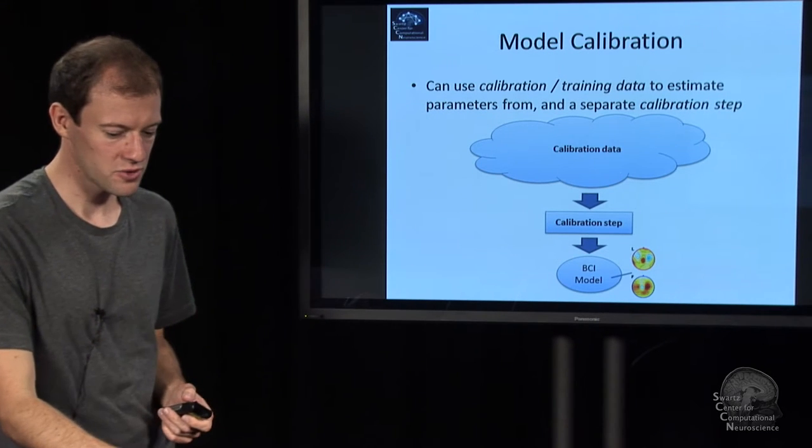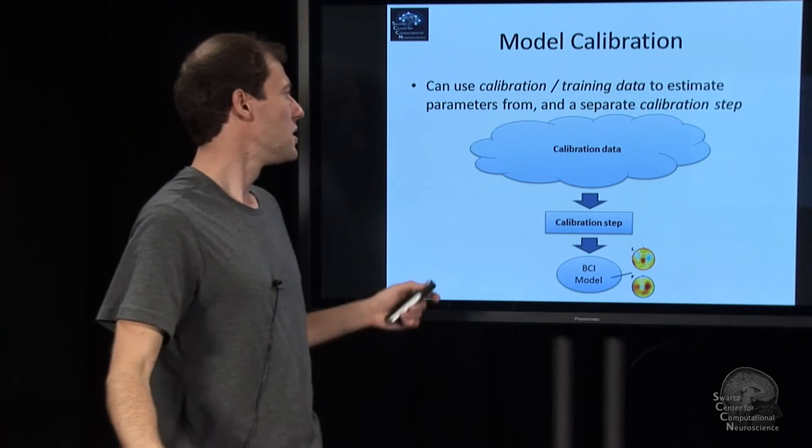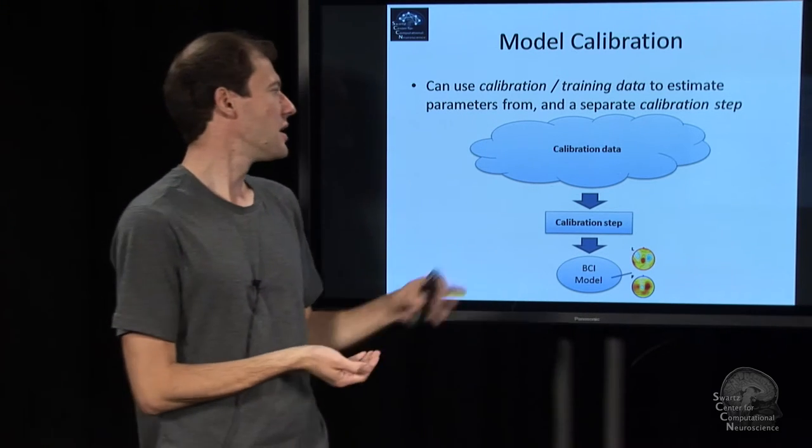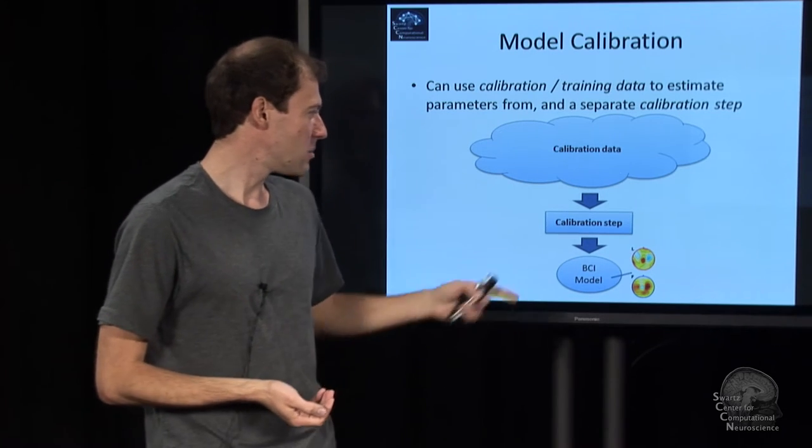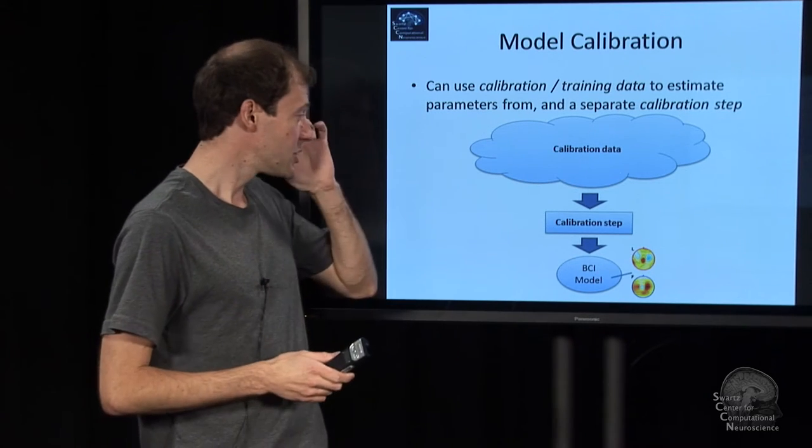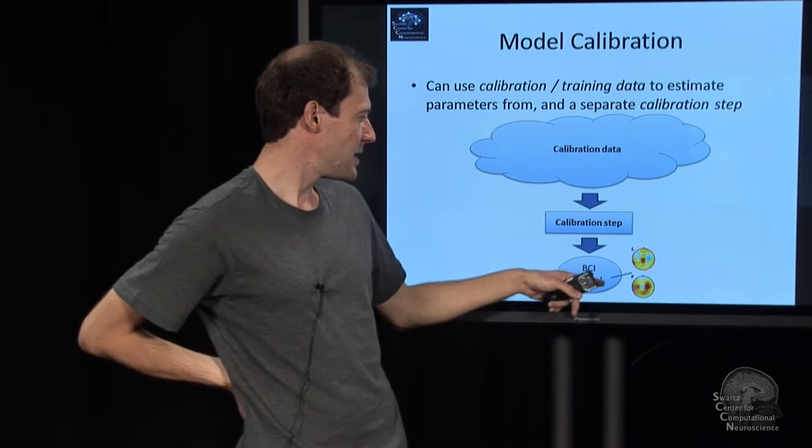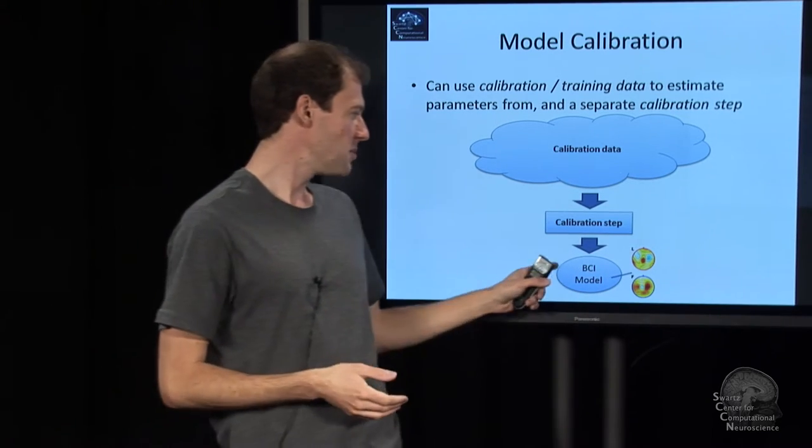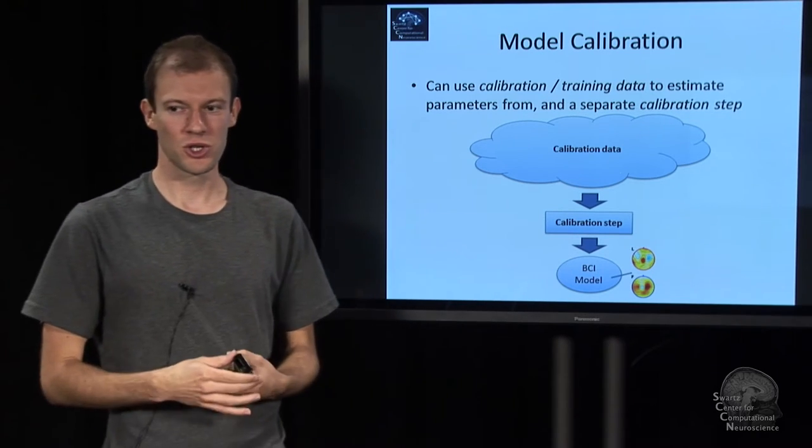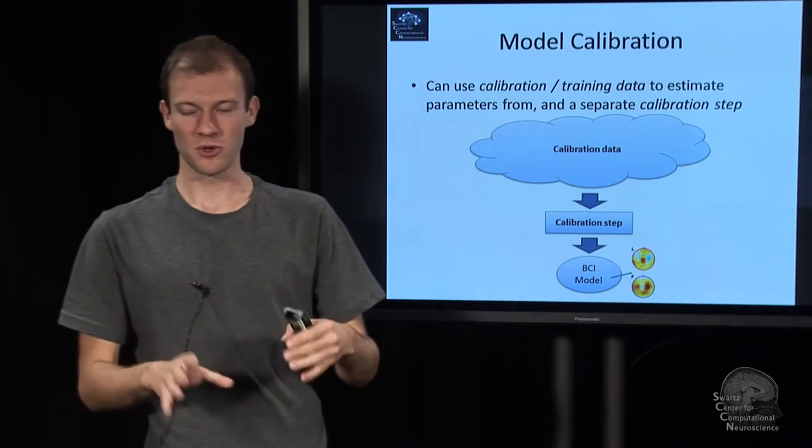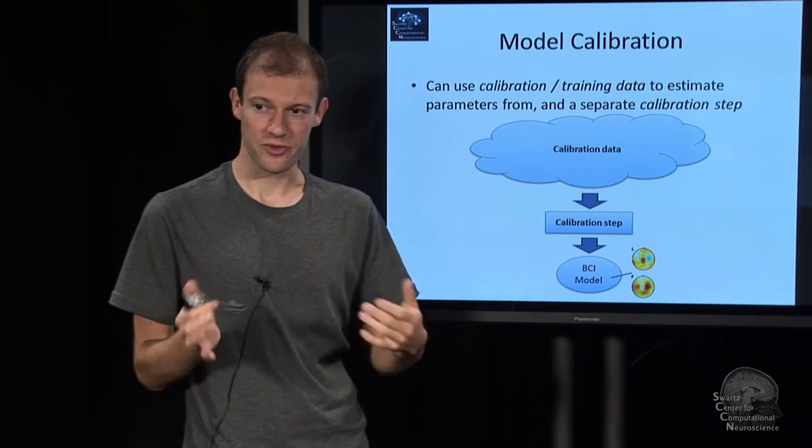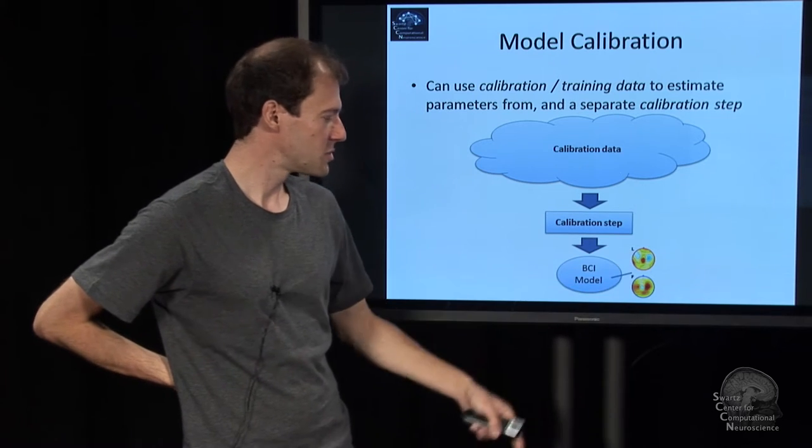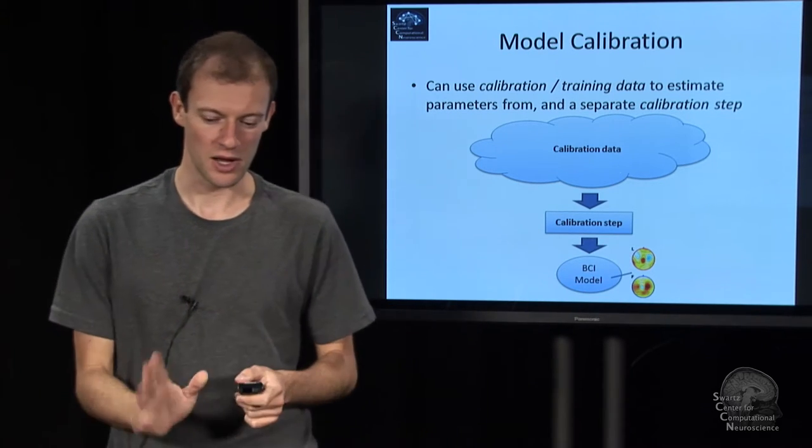Fundamentally, it amounts to having some calibration data that allows us to calibrate these parameters, and some processing step that generates the parameters from the data. We call the result, which is the collection of the parameters, a BCI model. It represents the set of parameters and relates to the function or form of a particular BCI. These can be things like spatial filters and other numbers.